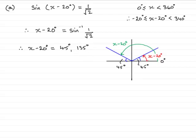So all that's left to do now is just simply add 20 degrees to each of these two answers. And that will give us x. x equals 45 plus 20 which is 65 degrees, and 135 degrees add 20 is 155 degrees.